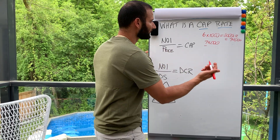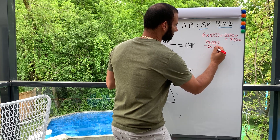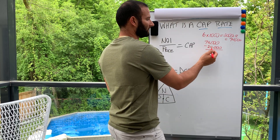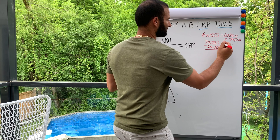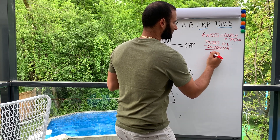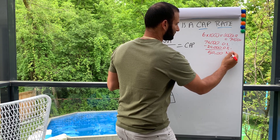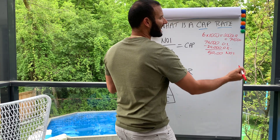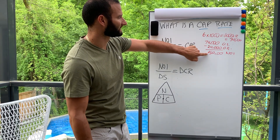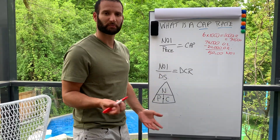For simplicity, we'll say operating expenses are twenty-four thousand dollars. So seventy-four thousand gross income minus twenty-four thousand operating expenses equals fifty thousand. You're left with fifty thousand, and that is your Net Operating Income (NOI) — gross income minus operating expenses gives you net income.